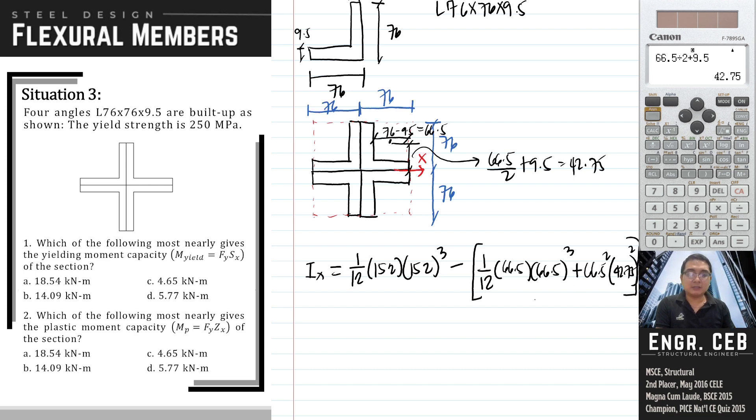This is now the moment of inertia of one hole. Since we have a total of four holes, we will just simply multiply this by 4. Therefore, Ix is equal to 5,636,383,0.25 millimeters to the fourth.